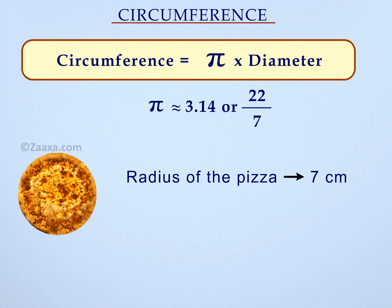We know the circumference of a circle is pi times the diameter of the circle, or 22 over 7 times the diameter. We know the diameter is 2 times radius.